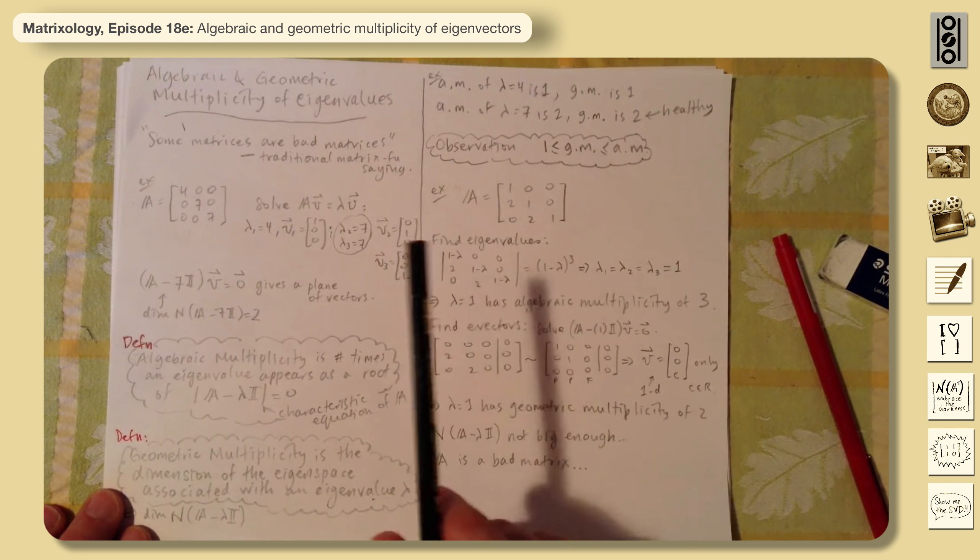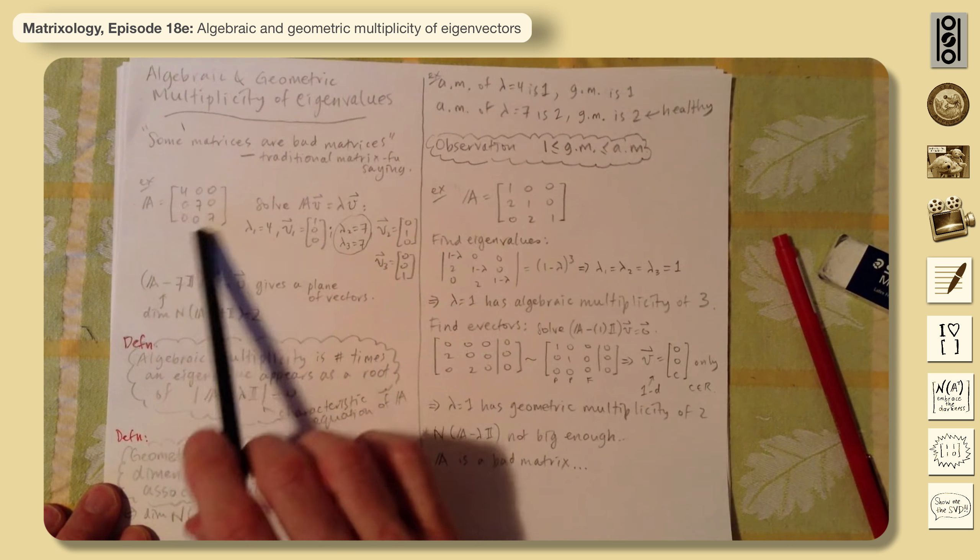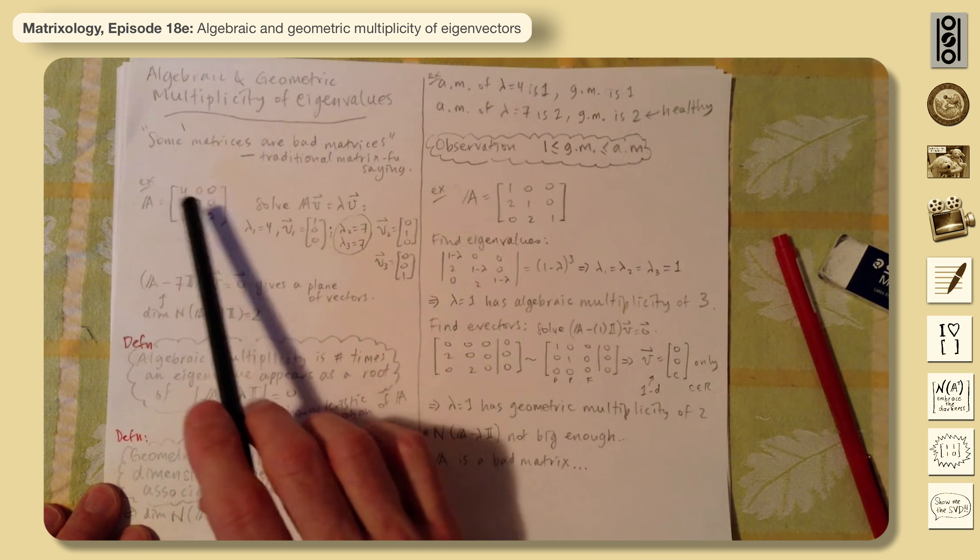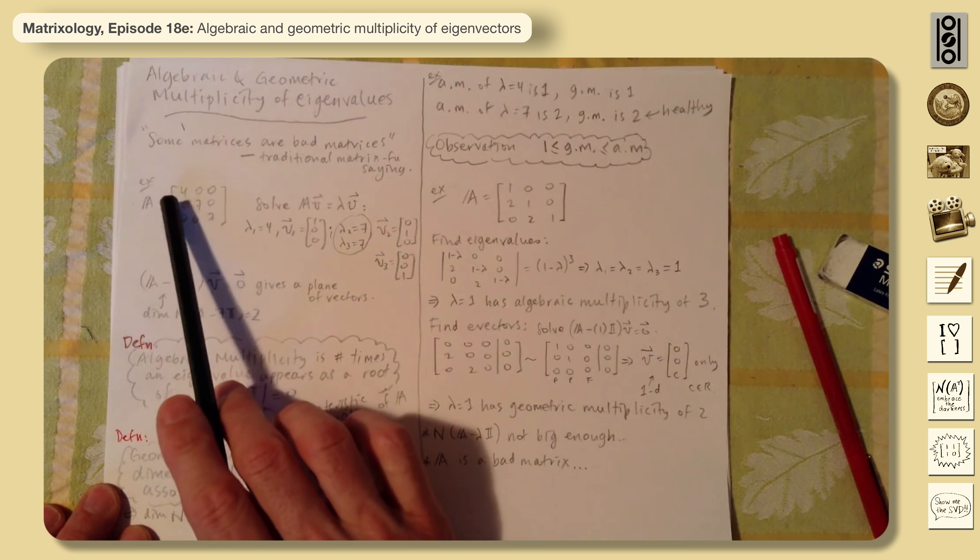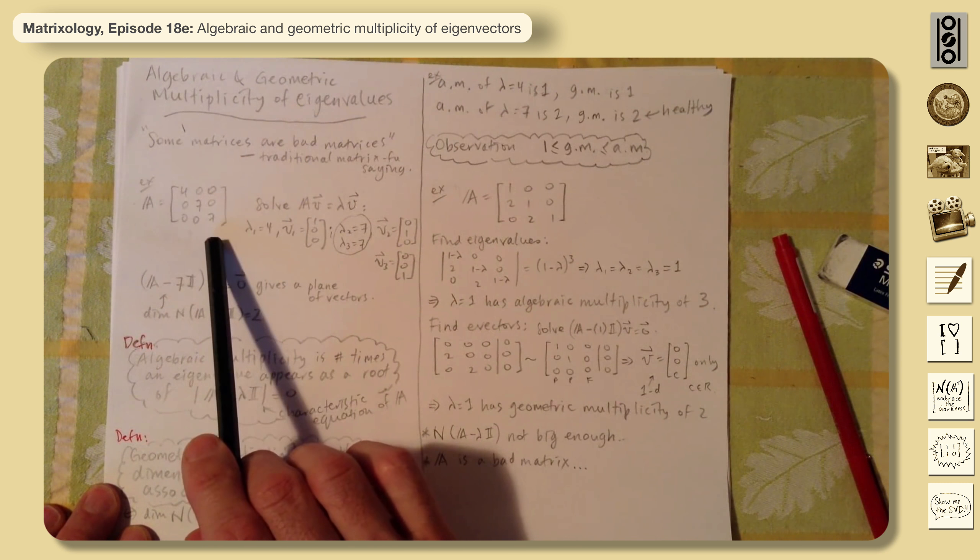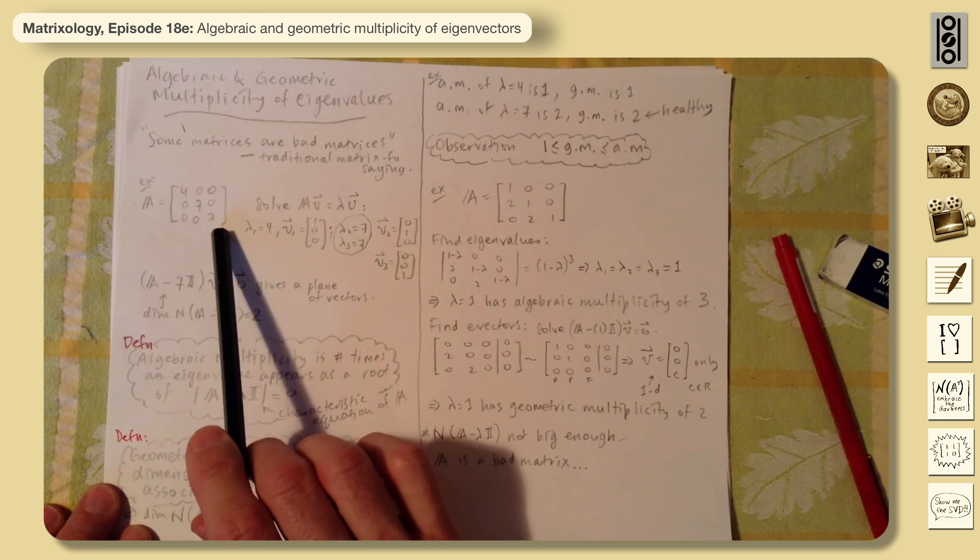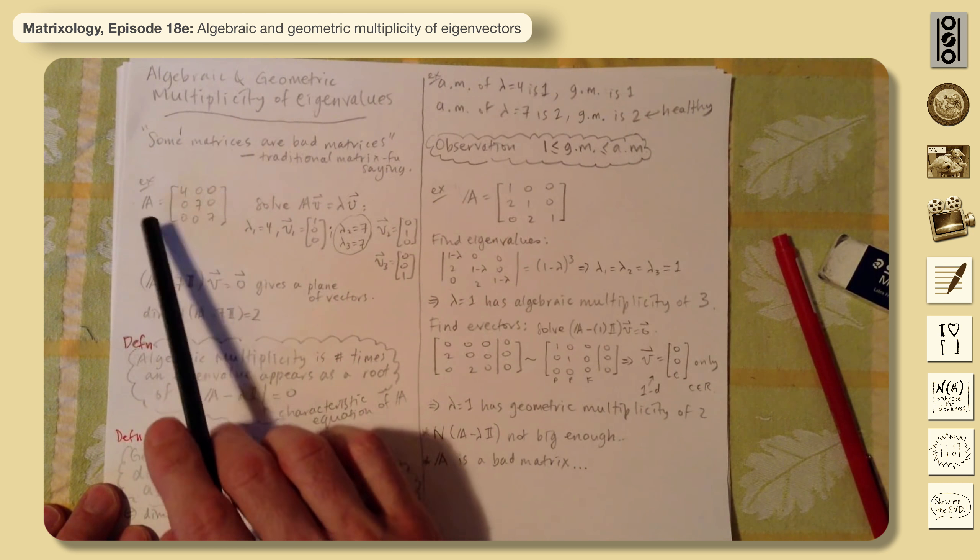Let's imagine this little example here, a diagonal matrix 4, 7, 7. So you can see straight away the eigenvalues are 4, 7, and 7. Or if you solve this, you get A minus lambda I. Straight away we get this. The eigenvalues are just sitting there.